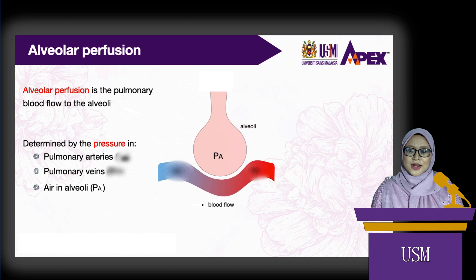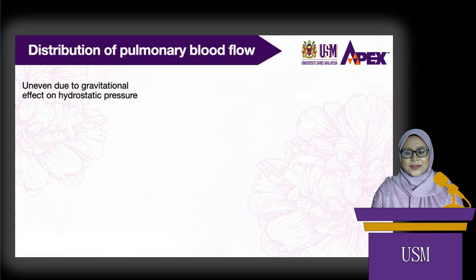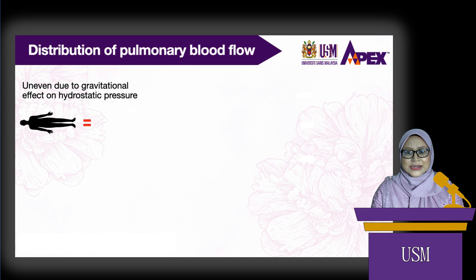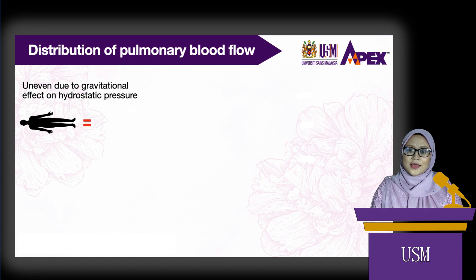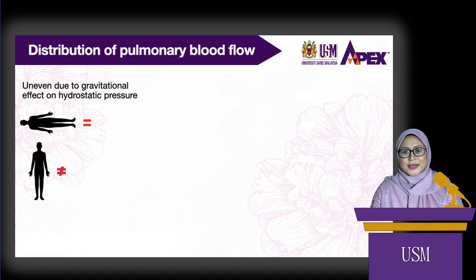Blood flow distribution to the lungs is uneven. It is affected by the gravitational effect on hydrostatic pressure, which is the weight of blood in the vessel. If a person is supine, blood flow is nearly uniform because the entire lung is at the same gravitational level. However, when a person is upright, there is a gravitational effect on blood flow distribution, so blood flow to the entire lungs is not uniform. It is lowest at the apex and highest at the base of the lungs.